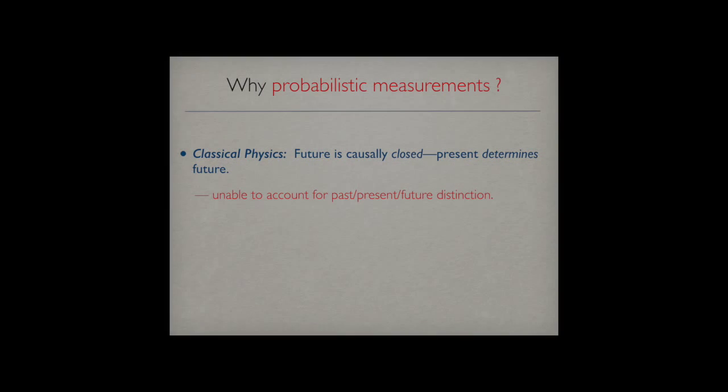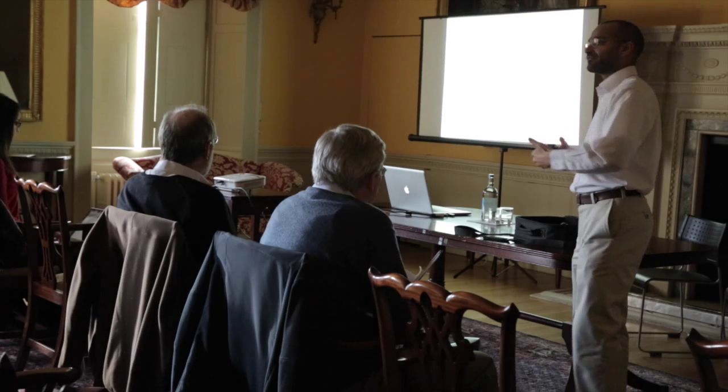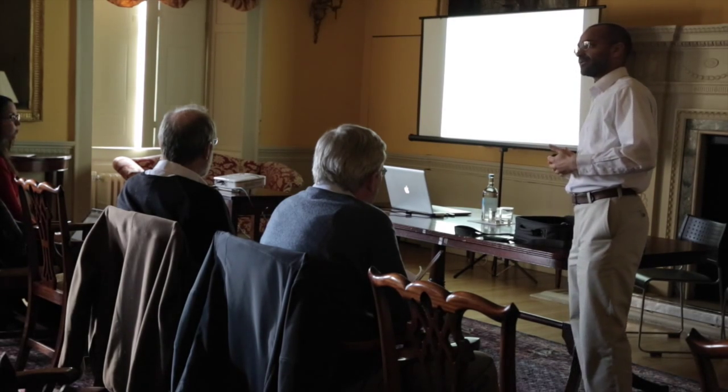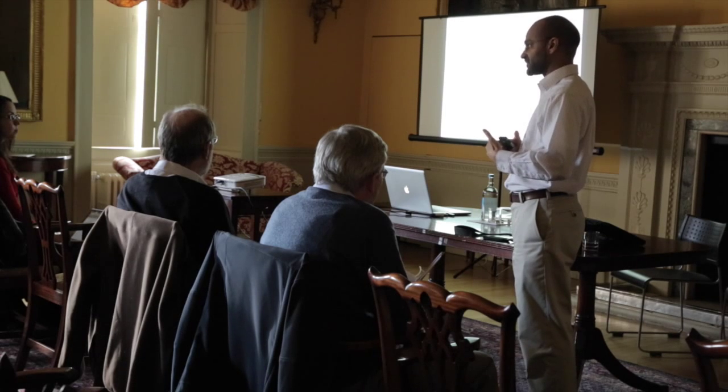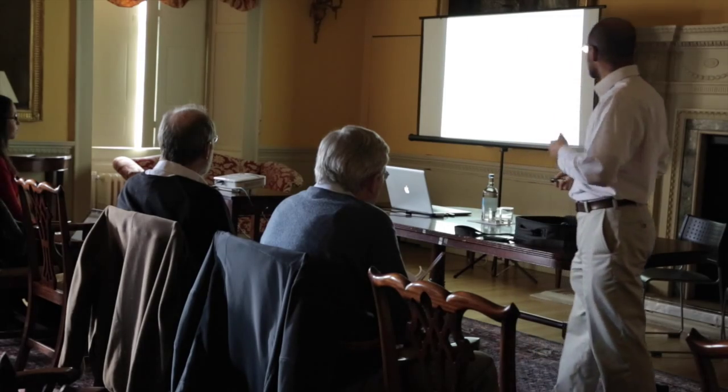In classical physics, as we also heard yesterday, the future is causally closed in the sense that the present determines the future. As a result of this structural feature, it's completely unable to deal with the past, present, future distinction, which is such a fundamental part of the way we organize our experience of the world. It can't, for example, account for why we don't experience time all at once, why we only experience the now, which is a great mystery. There's again a disconnect between the classical conception of reality and the everyday one. If we follow Eddington's idea that our intuitive experience of past, present, and future is a reliable guide to reality, this is very problematic.